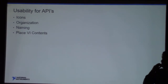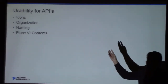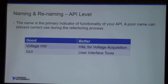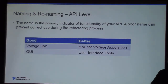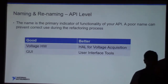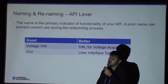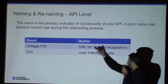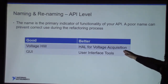We have four main usability considerations for refactoring at the architectural level: icons, organization, naming, and place-VI context. Today we're going to focus on organization and naming. Names are important for your code — the name is the primary indicator of functionality. Good: 'voltage' for getting voltage from hardware. Better: an API to handle a hardware abstraction layer for voltage acquisition, and user interface tools. Always use the better option, not just a good one.